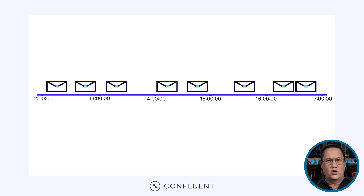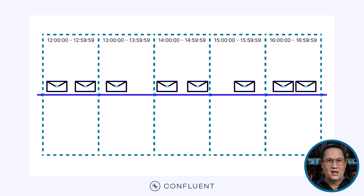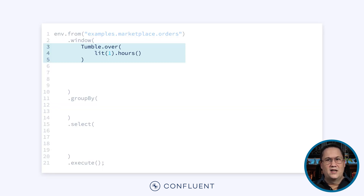Take a look at this timeline. Each envelope represents a message arriving in the system at a specific time. We could divide this timeline into a series of hourly windows. Each window is one hour long and there's no overlap between them. These are what we call tumbling windows, and they represent one of the simplest types. Defining a tumbling window is relatively simple — the tumble over command just requires a duration for the window. In this case, we've specified a tumbling window of one hour.